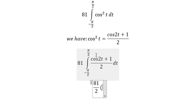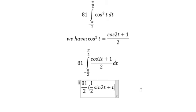The integral of cosine squared t is one-half sine 2t. The integral of 1 is t. We put the boundaries in here.